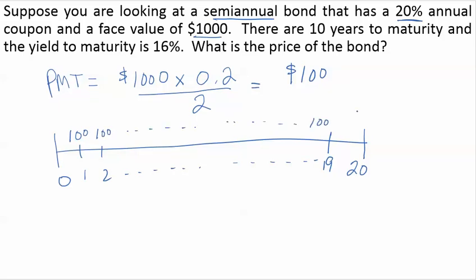In the last period, you receive the face value plus the last coupon payment. This will all be discounted at the yield to maturity of 16%, divided by 2 because the periods are every 6 months.